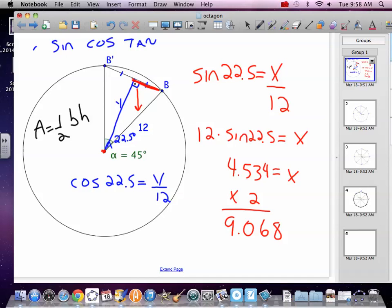Same thing, just now we're going to use cosine, because we're going to find the other side. 22.5, cosine of that. Multiply that by 12. And we get 11.087 equals Y.